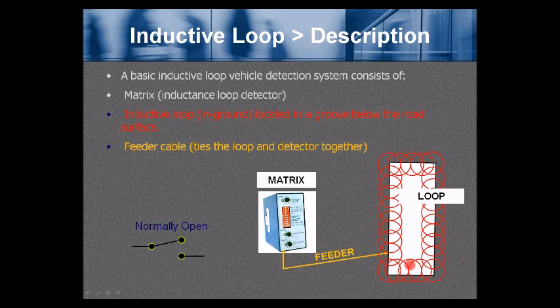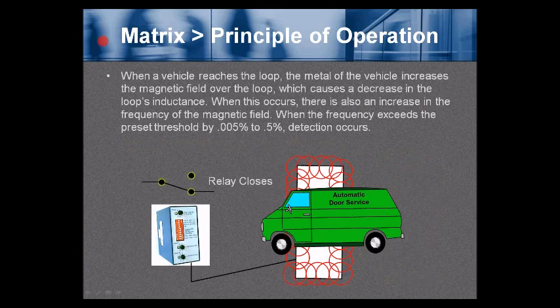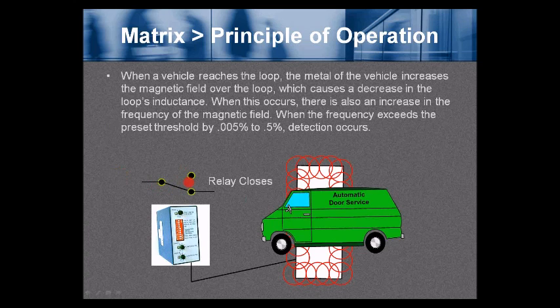Matrix principle of operation: when a vehicle reaches the loop, the metal of the vehicle increases the magnetic field over the loop, which causes a decrease in the loop's inductance. This also causes an increase in the frequency of the magnetic field. When the frequency exceeds the preset threshold by 0.005% to 0.5%, detection occurs and the relay closes.